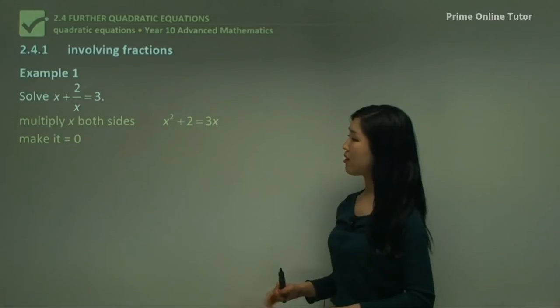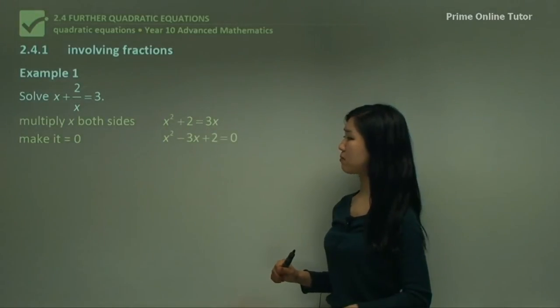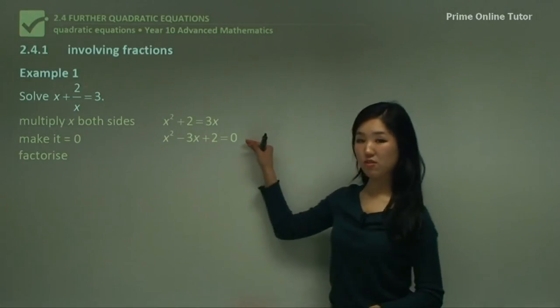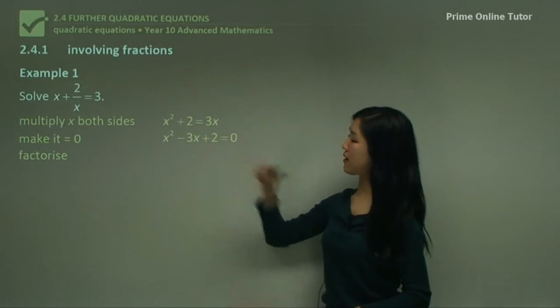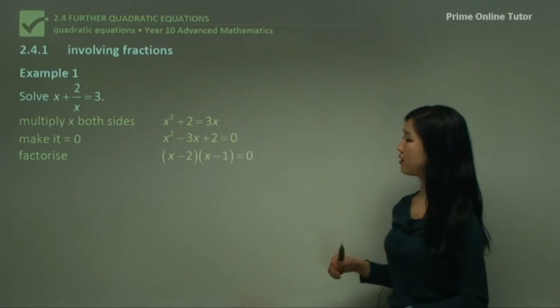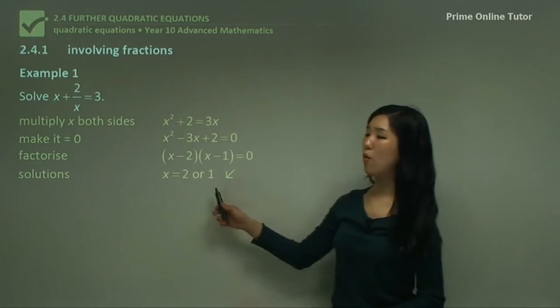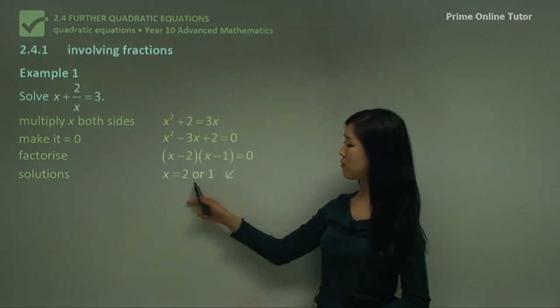Now make it equal to 0. Move everything onto one side. So I have x² - 3x + 2 = 0. Factorize it by looking at the factors of 2. You should get (x - 2)(x - 1) = 0. So find me the solutions x = 2 or 1. x equals to positive 2 and 1.